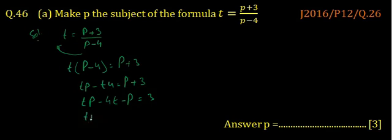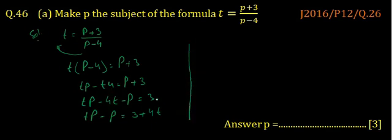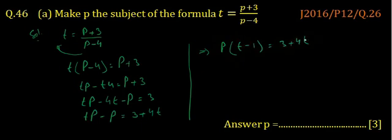We can arrange it: tp minus p is equal to 3 plus 4t, shifting 4t from left to right. We can take p as a common factor here, so the remaining is t minus 1 is equal to 3 plus 4t.